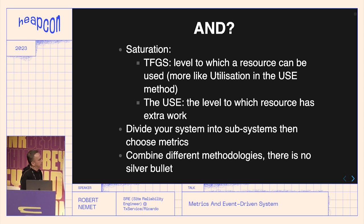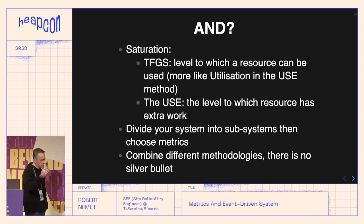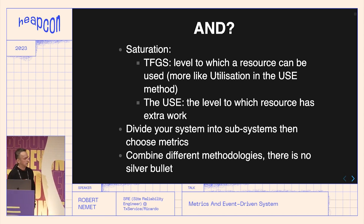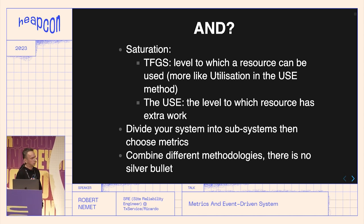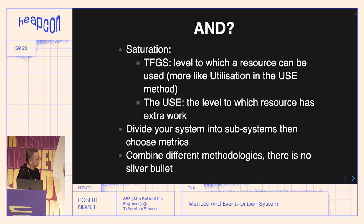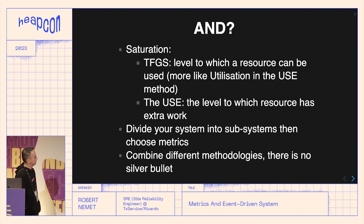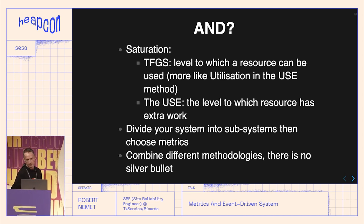Which method should you use? You'll probably use either the Four Golden Signals, or — which I think is better — divide your system into different subsystems, then choose the proper metrics to understand each subsystem and create the right alerting, planning, and automation around it. There's no silver bullet, so combine approaches as needed.